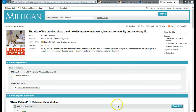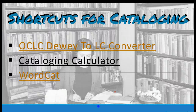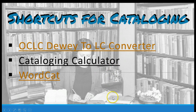So again, these are three really easy tools to help you with cataloging: the Dewey to LC converter, the cataloging calculator, and WorldCat. If you have any others, feel free to share them in the comment section and maybe later I can make a video tutorial about them. Or if you'd like to share some of your own and have it hosted on my blog, feel free to do so. Thanks for watching.